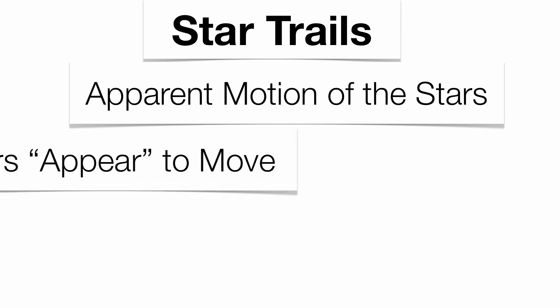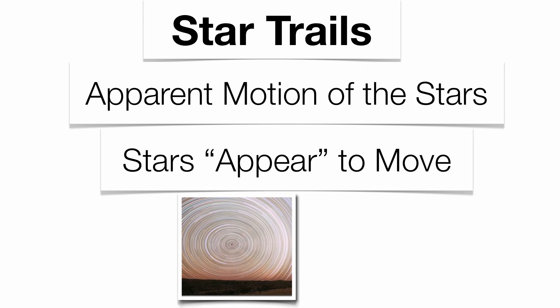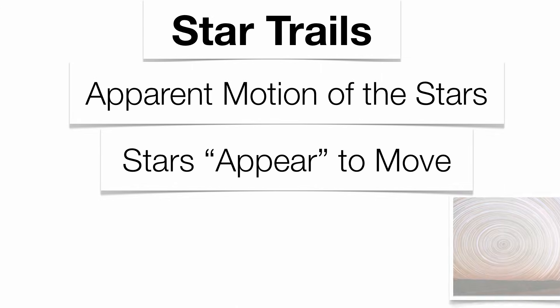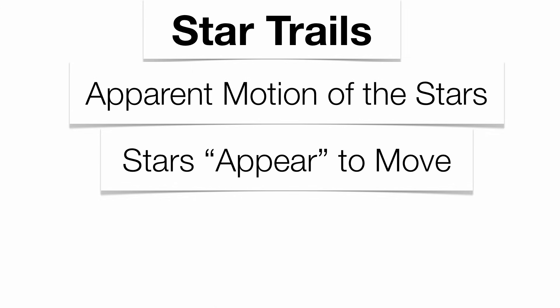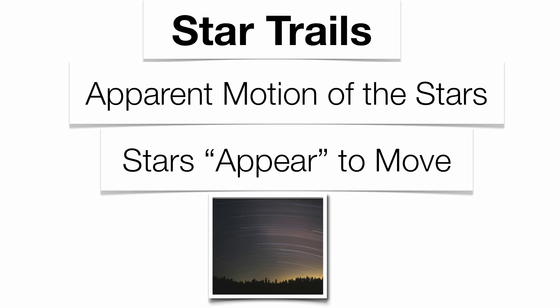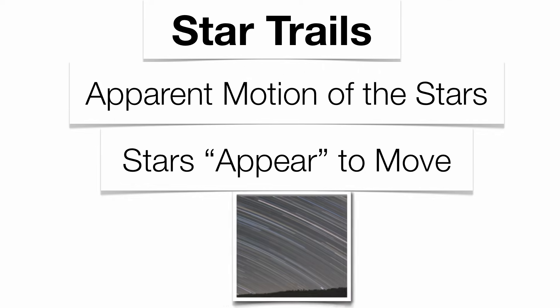We can figure this out by actually photographing our stars. We can take time-lapse photography of the stars creating what are called star trails. This shows the apparent motion of our stars and how they appear to move through the nighttime sky — but remember, it's us that's moving, not the stars. Looking north, your stars will make circles around Polaris. Looking east, they'll be rising upward. Looking south, they'll make small horizontal paths across the sky. And looking west, they'll be setting in a downward motion. Those are your star trails.